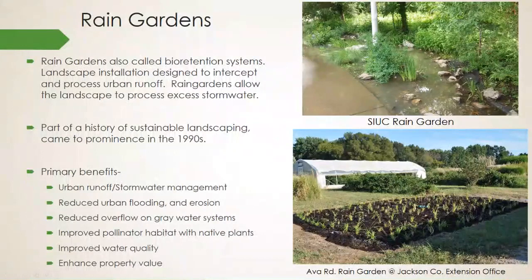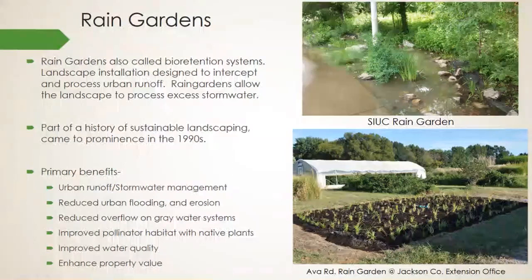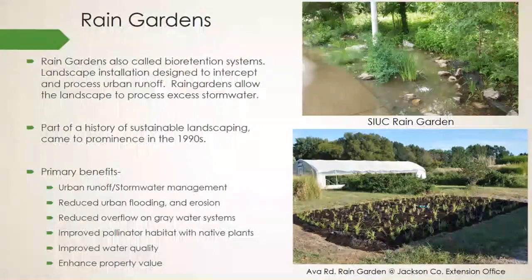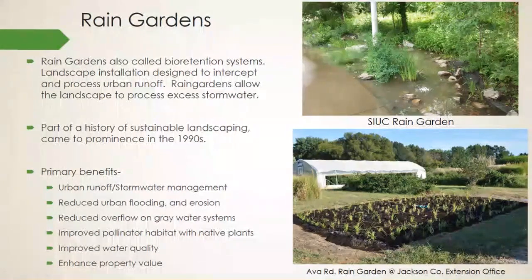Rain gardens — one of my favorites — are also known as bioretention systems. They are a landscape installation designed to intercept and process urban stormwater runoff, allowing the landscape to naturally filtrate and reuse excess stormwater, keeping it within the natural or designed environment. Rain gardens have probably been used informally for a long time, but the formal design and implementation came to prominence with landscape architects in Maryland in the early 1990s, where we see the modern development of rain gardens and bioretention systems.